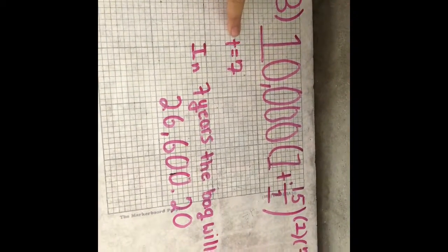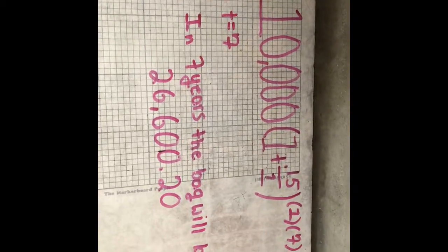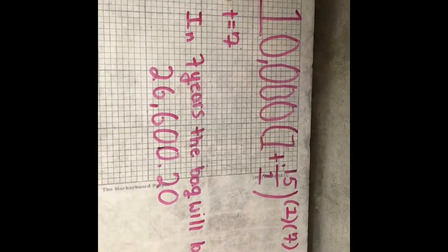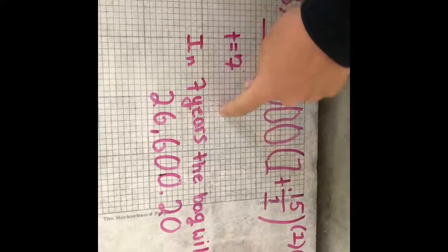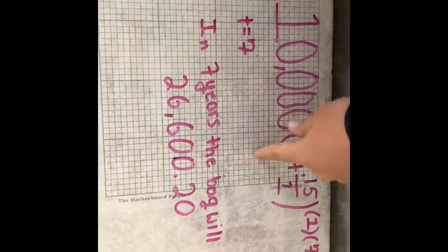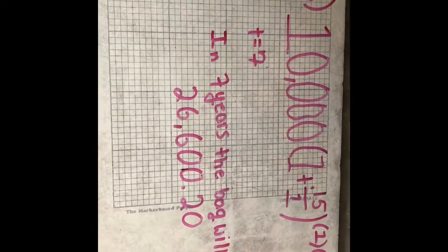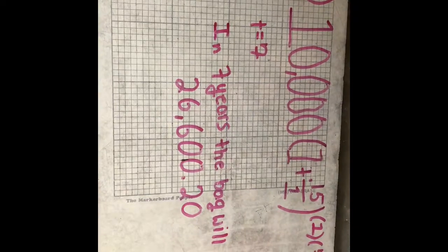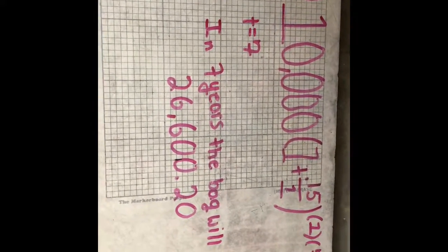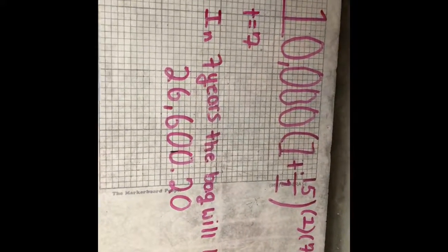So then since t equals 7, you plug it into your calculator and you get, in seven years the bag will be $26,600.20.